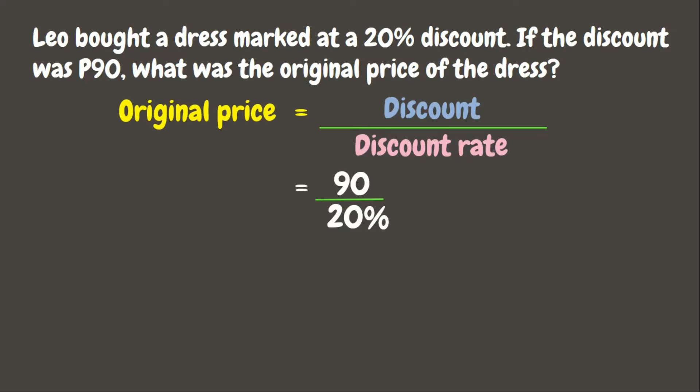But before we can divide, we need to change the percent into decimal. To change the percent into decimal, change the percent sign into a decimal point and then move it two times to the left. Now we have 90 divided by 0.20.